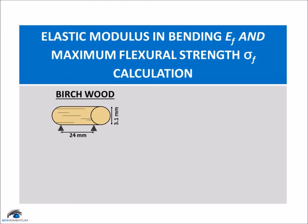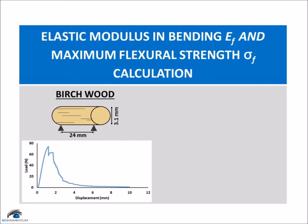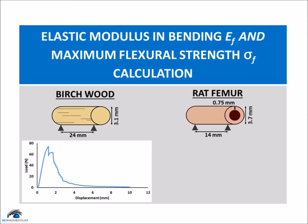The span length is 24 millimeters and the diameter is 3.1 millimeters. Here is the measured load-displacement curve of the birch wood sample. Now the data from the three-point bending test of the rat femur sample.